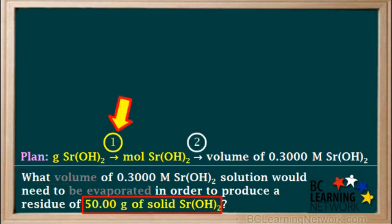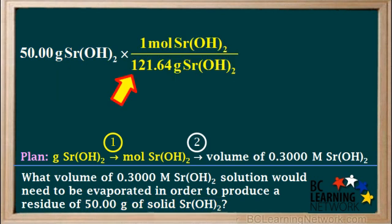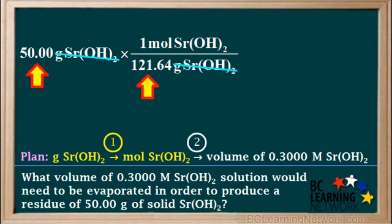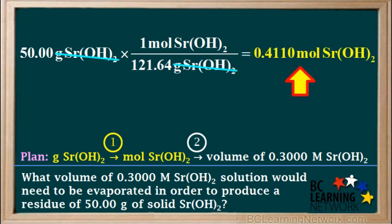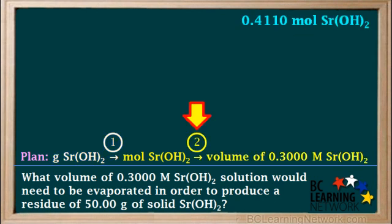In step 1, we convert grams of Sr(OH)₂ to moles. We start by writing 50 grams of Sr(OH)₂, and multiply by 1 mole of Sr(OH)₂ over the molar mass of Sr(OH)₂, which is 121.64 grams. We cancel out the grams of Sr(OH)₂, divide 50 by 121.64, and we get 0.4110 moles of Sr(OH)₂, which we can jot down at the top.